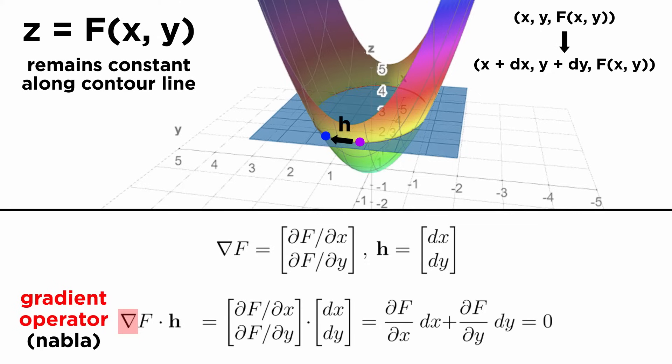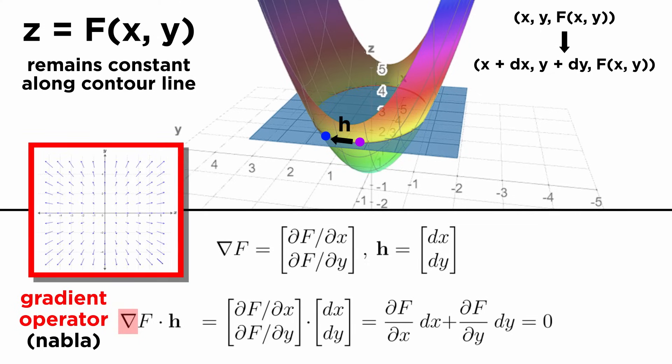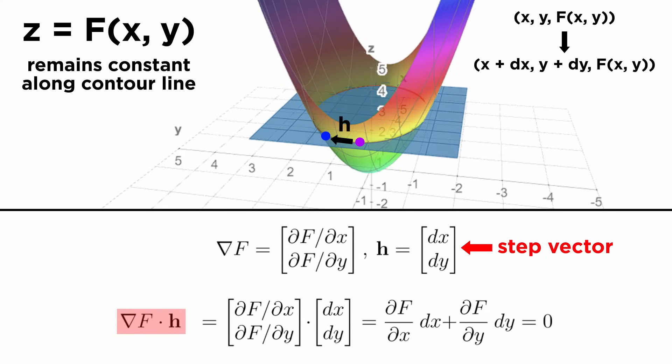Recall that the gradient operator, represented by this triangle symbol, nabla, gives us a vector field showing the direction in which we should make a small step to cause the greatest possible change in f. We can find the component of this change in any given step direction by taking the dot product with our step vector. Since we require zero change in f, we get the equation ∇f dotted with the vector h, which is a step along the contour line, equals zero.